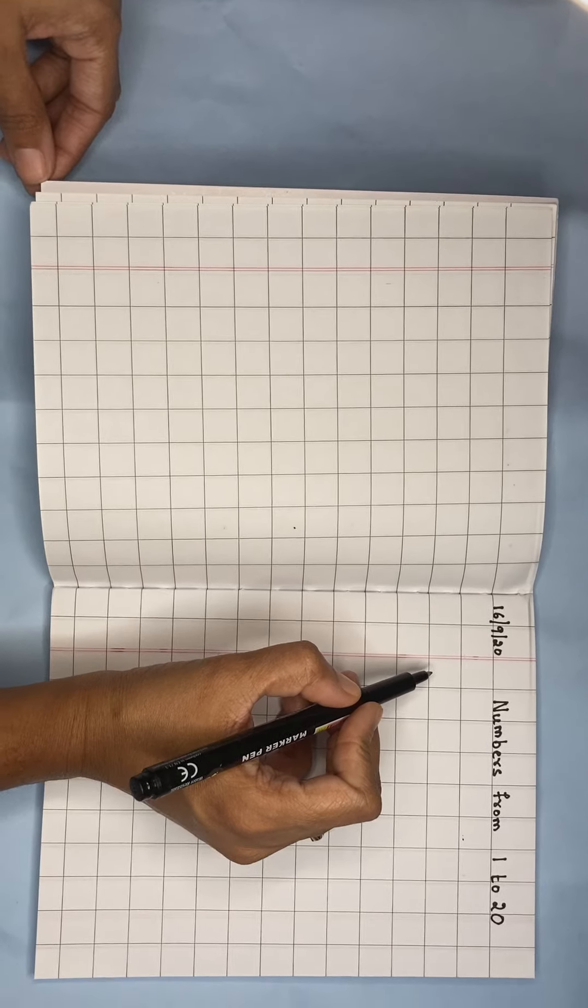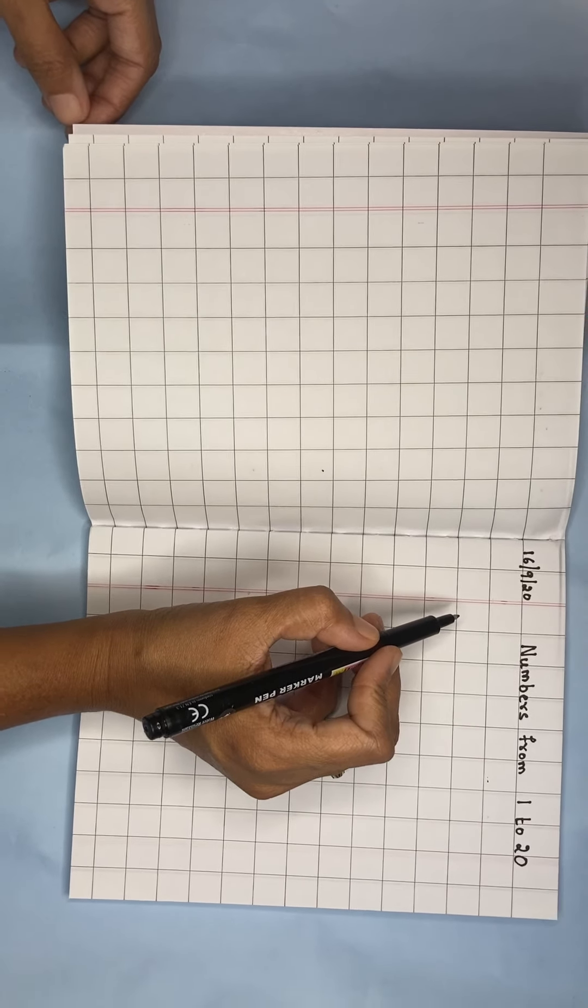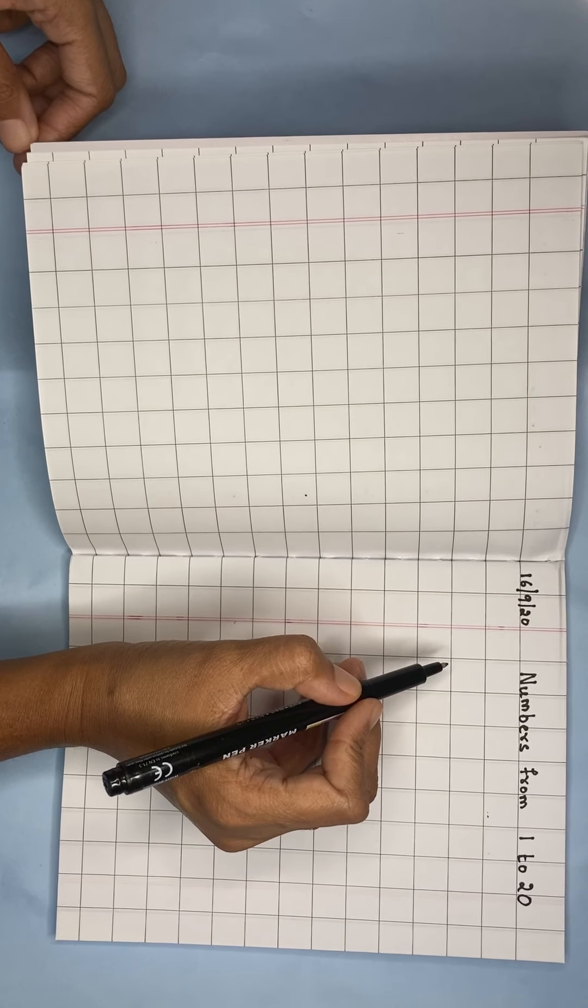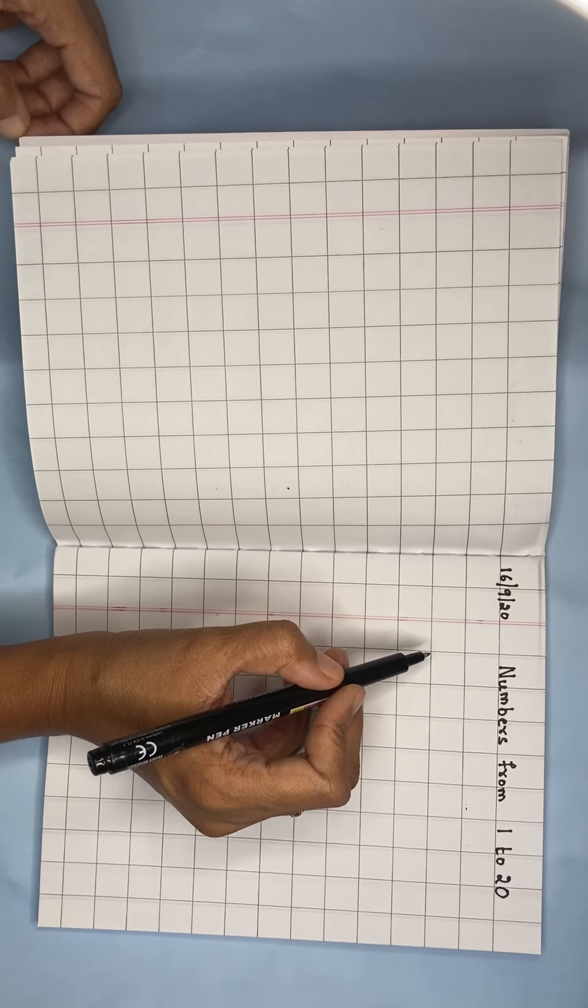In your previous class you have seen about numbers from 1 to 20. In today's session we shall learn how to write numbers from 1 to 20 in a square line book.